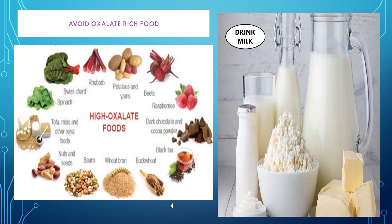Since 80% of kidney stones are formed by calcium oxalate deposits, try to avoid foods that are oxalate-rich in nature like beetroot, spinach, nuts, beans, dark chocolate, and tea in excess, because they are really kidney stone-forming agents.